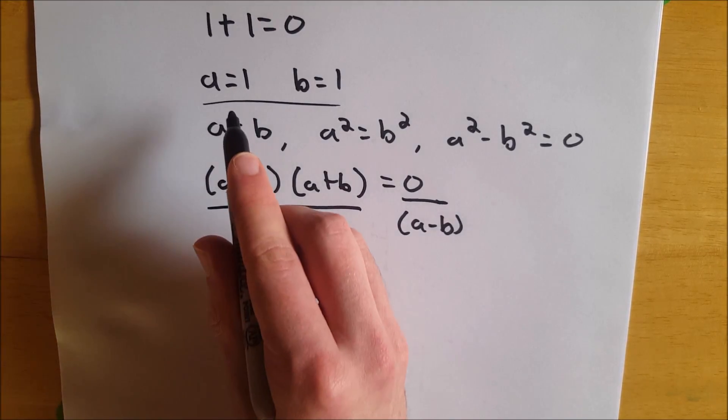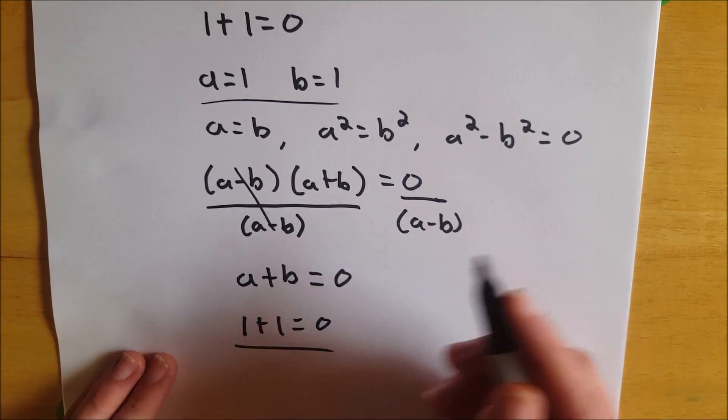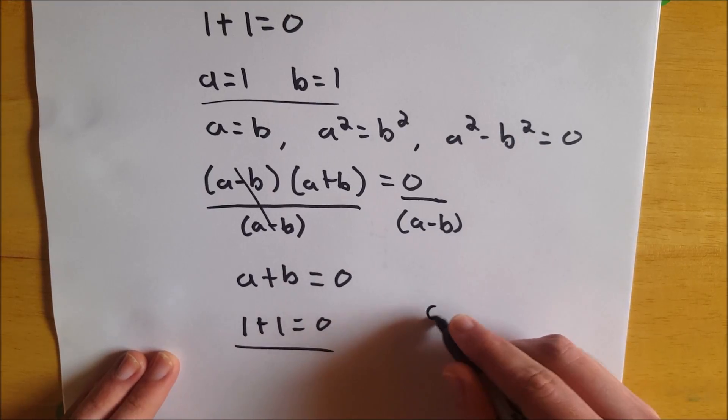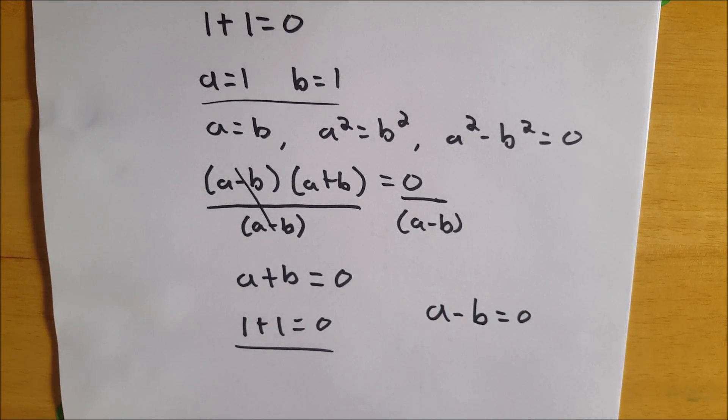We divided by A minus B, but as it turns out, of course, A equals 1 and B equals 1. So A minus B is actually equal to 0. And as you should know, we cannot divide by 0. That is not allowed. So therefore, that's the error in the proof.